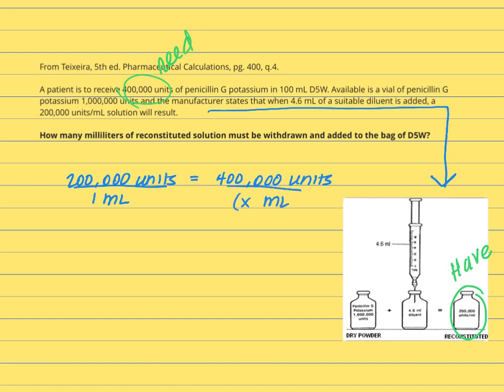We're simply going to cross multiply, and we will get 200,000x is equal to 400,000. Solving for x, we see that x equals 2 mLs. What this basically means is that the pharmacist should add 2 milliliters of diluent to a vial containing 400,000 units of penicillin G potassium powder to obtain a 200,000 units per mL solution.